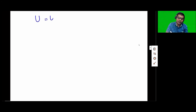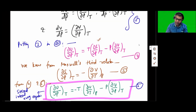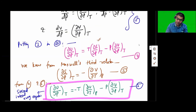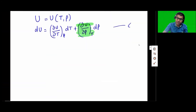Now, since we have considered U as a function of temperature and pressure only, I can write dU using mathematics as del U over del T at constant P times dT, plus del U over del P at constant T times dP. We have already calculated del U over del P at constant T from the second internal energy equation — that is this term — so this term can be substituted from the internal energy equation. Let's say this is equation 6.